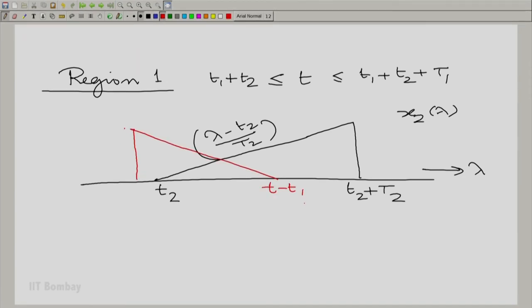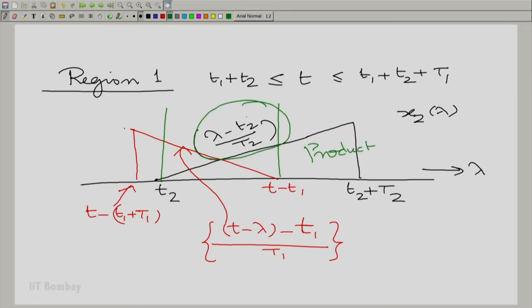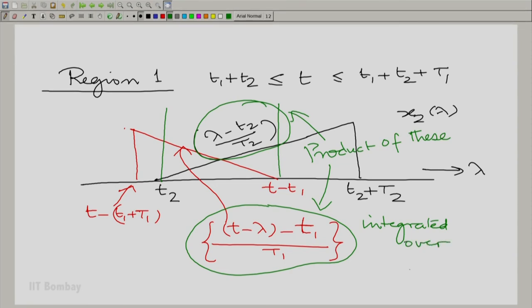Which is the region of overlap? Let us mark that in green and let us calculate the product. This is the region of overlap, and we also need to write the expression everywhere. The expression for this is T minus lambda minus small T1 divided by capital T1. And we need to take the product to calculate the convolution. We take the product of this with this, integrated over T2 to T minus T1. This region, this region, integration region or integration interval.